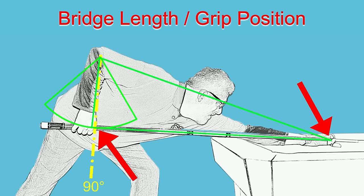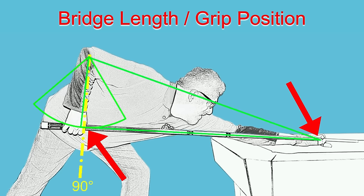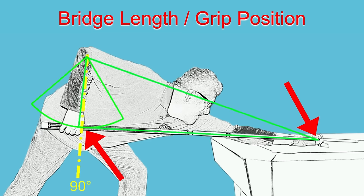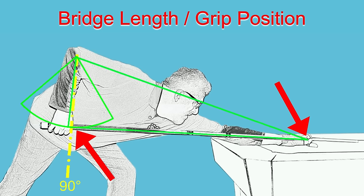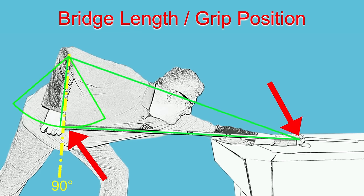Most shots played with medium speed use your standard bridge length and corresponding grip position, always keeping the grip hand at or just behind 90 degrees to the cue stick. So it makes sense that the power draw shot, which we want to hit very forcefully, should be played with a longer bridge and corresponding grip position closer to the end of your cue stick.